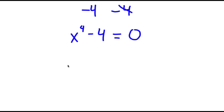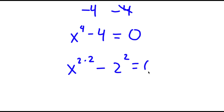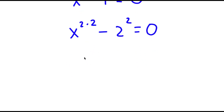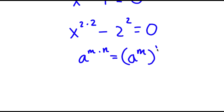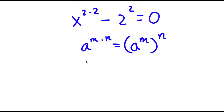Now, x to the power of 4 I can rewrite as x to the power of 2 times 2, and 4 I can rewrite as 2 squared. If I have something in the form a to the power of m times n, this is equal to a to the power of m to the power of n. So x to the power of 2 times 2 equals x to the power of 2 to the power of 2.